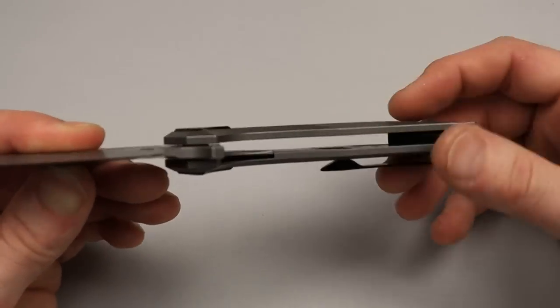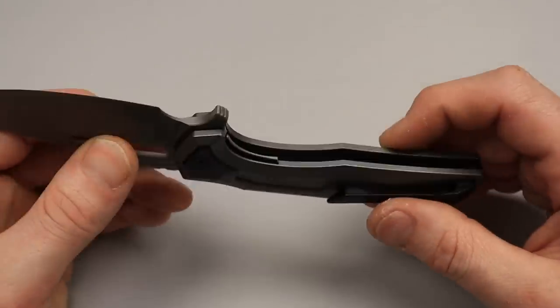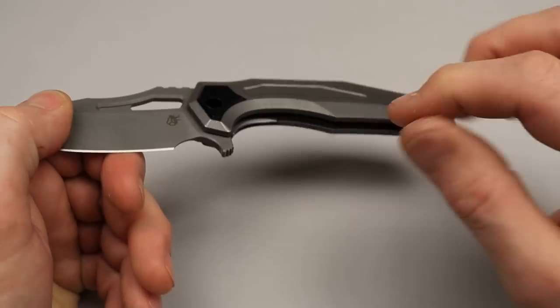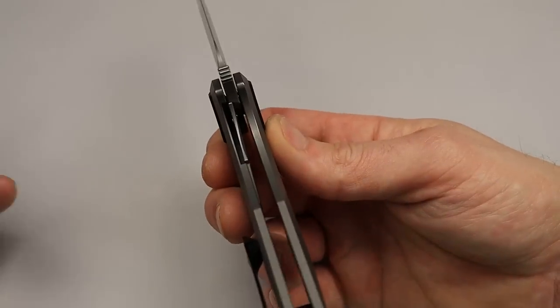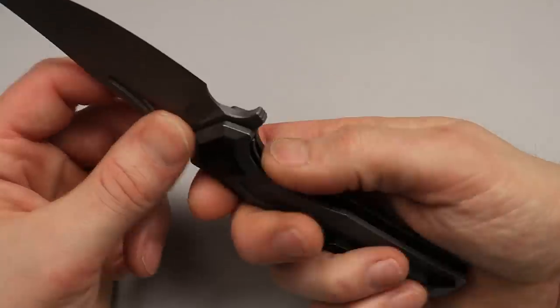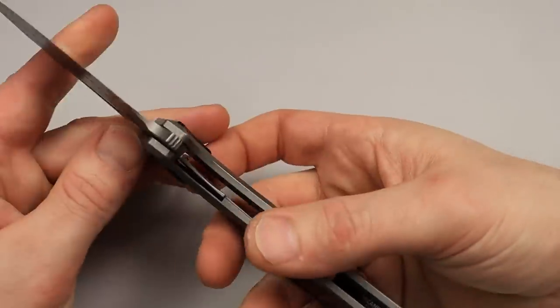It's somewhat of a sub liner lock because the scales are here and the liner is screwed in from the inside. If they did it, they'd probably want to do a steel lock bar insert on the liner anyway. So is it that big of a deal? No, not really in this case because it is solid titanium.